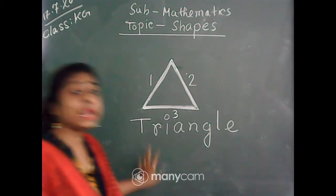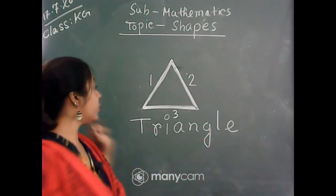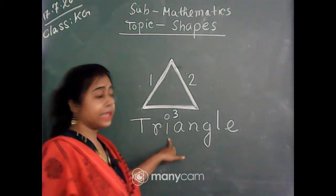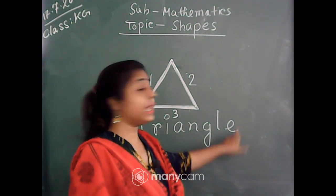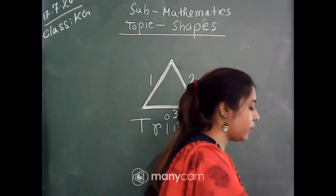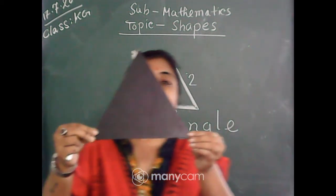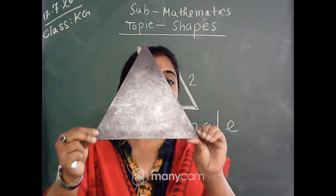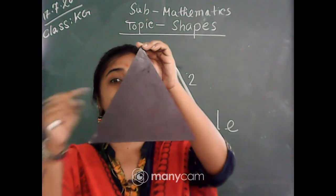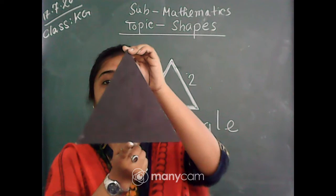And the spelling is very important, that you have to practice. It is T-R-I-A-N-G-L-E, triangle. Now I am going to show you — this shape is triangle. Can you see the shape? Triangle, because it has three sides: one, two, and three.